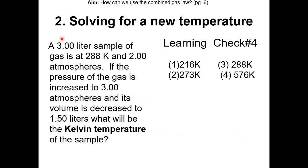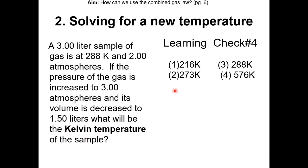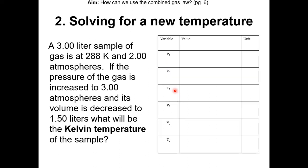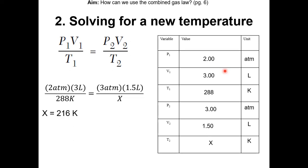Question 2: A 3-liter sample of gas is at 288 Kelvin and 2 atmosphere. If the pressure is increased to 3 atmosphere and the volume is decreased to 1.5 liters, what is the Kelvin temperature? We're given pressure, volume, and temperature initially, and solving for the new Kelvin temperature. Plugging into the equation and solving with a calculator, we get 216 Kelvin — answer choice 1.